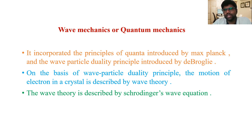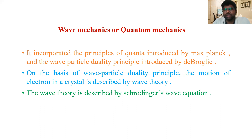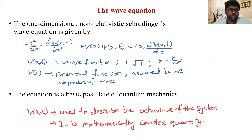Schrödinger's wave equation is given in a general form. We convert it into time-dependent or time-independent versions by applying it to a particular system with appropriate boundary conditions. The general Schrödinger wave equation is unique and is one-dimensional and non-relativistic.